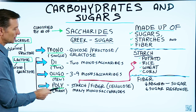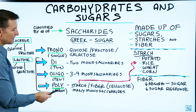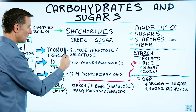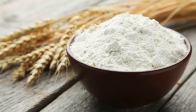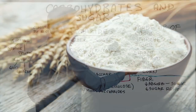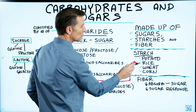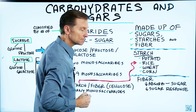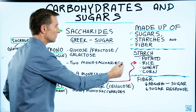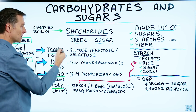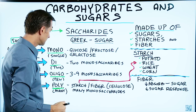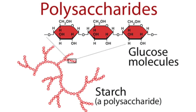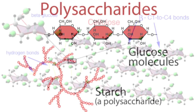Polysaccharides — poly means many — would be about 10 or more saccharide units. That would be like a starch. Examples include potato, rice, wheat, and corn. Those are starches, composed of many saccharide units connected together. Fiber is also an example of a polysaccharide, called cellulose.